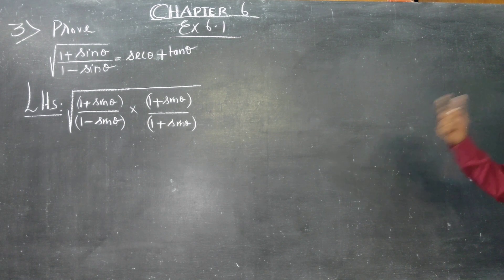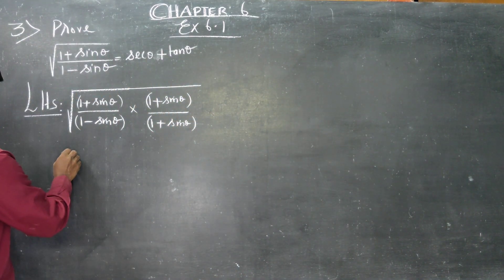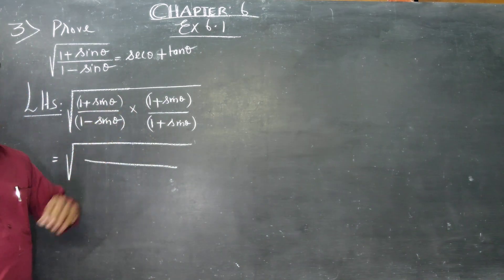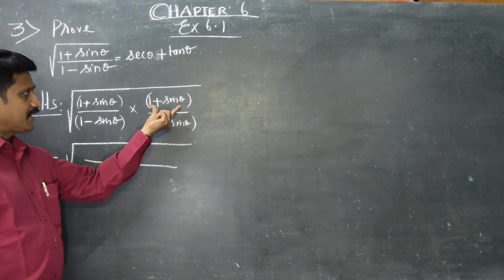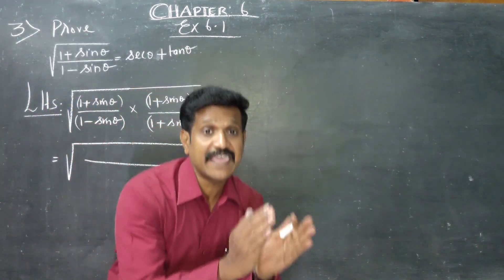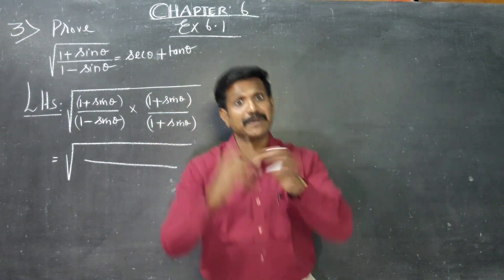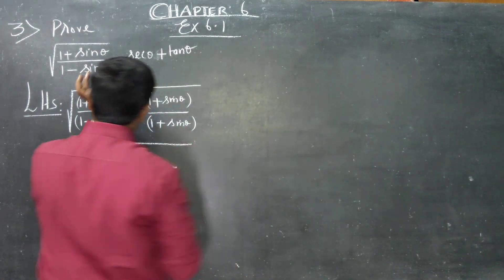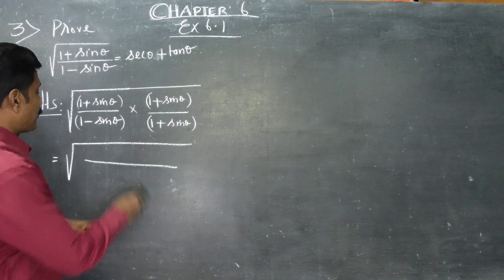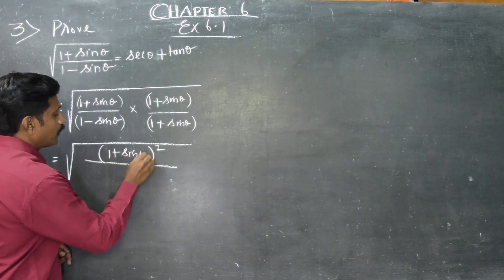You can start with LHS and end at RHS, or you can go with RHS and finish at LHS. This is the exact stage. We have square root of numerator: (1 plus sin theta) into (1 plus sin theta) — same into same, x into x is x squared, a into a is a squared — so numerator is (1 plus sin theta) whole square.